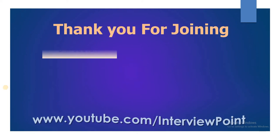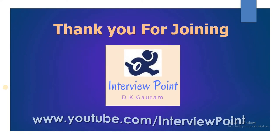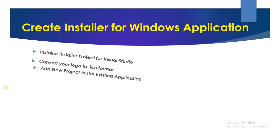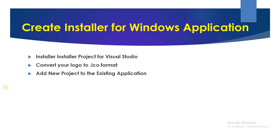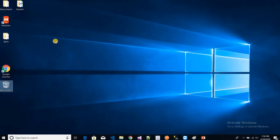Hello friends, this is DK Gautam and thank you for joining Interview Point. In this video I am going to talk about how to create an installer for a Windows application. First, what is the requirement? We need to download the installer project for Visual Studio, and if we have a logo we need to convert it into the ICO format. After that we need to add a setup project to the existing application.